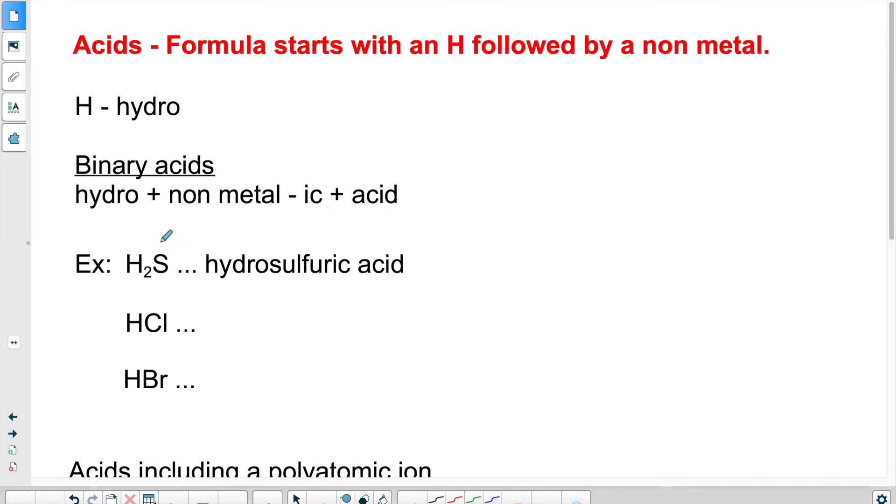If we take a look at the first example, we have H2S. We replace the H's, and don't forget, this is ionic, we do not use prefixes. We replace the H by hydro, and then S, which is sulfur, rather than putting sulfur, we'll change the ending and put IC, so sulfuric, and then put the word acid. So hydro, sulfur becomes sulfuric, acid.